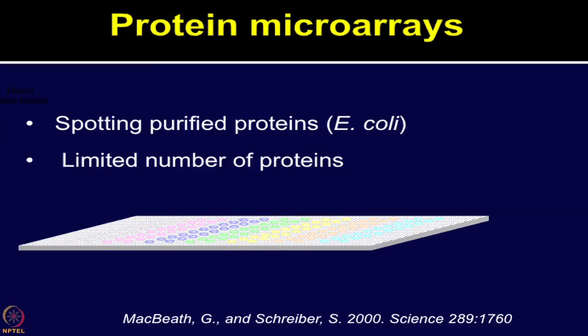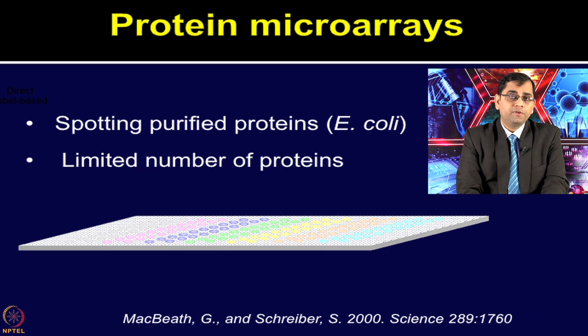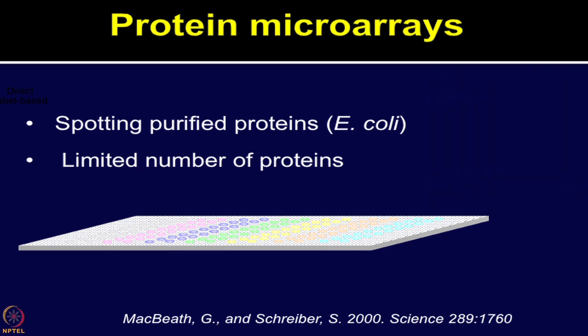Compared to DNA microarrays, which have shown great promise, there are relatively few studies published using protein microarrays. The protein microarray field remains very challenging because generating the protein content is difficult — purifying even a single protein in a lab setting is not easy, let alone thousands of proteins. Scientist Gavin Macbeth at Harvard first demonstrated the feasibility of printing proteins on the chip surface in a high density array similar to DNA microarrays.